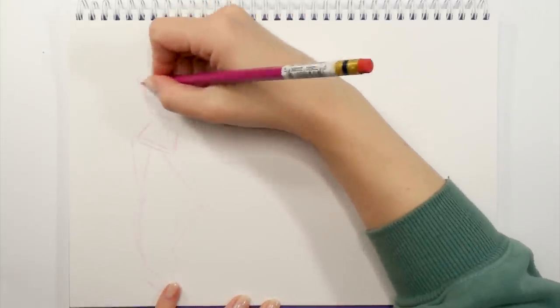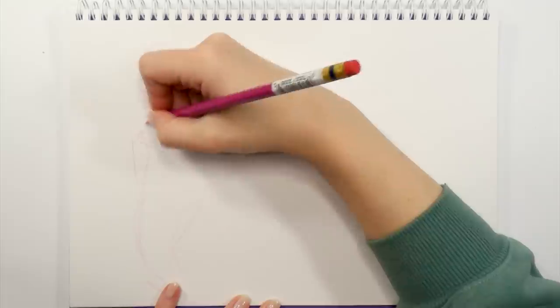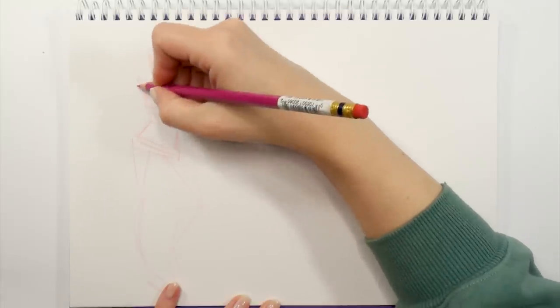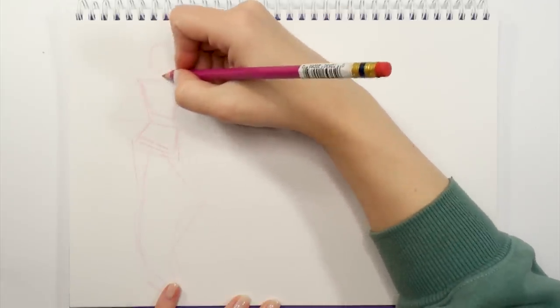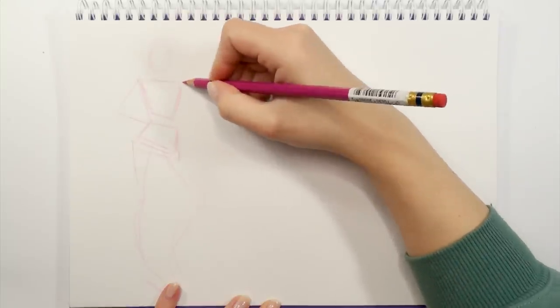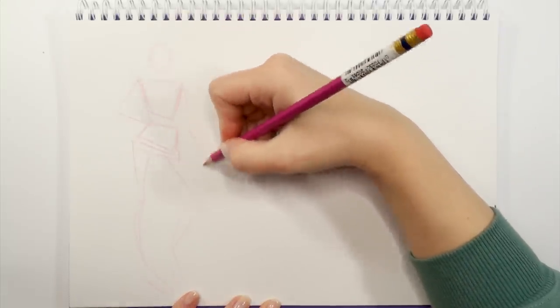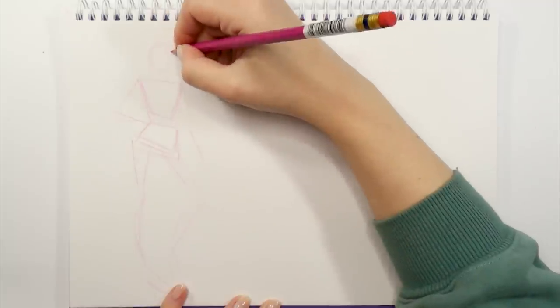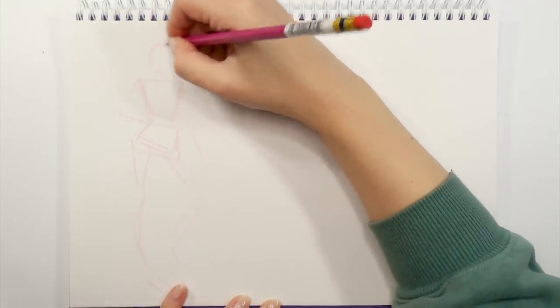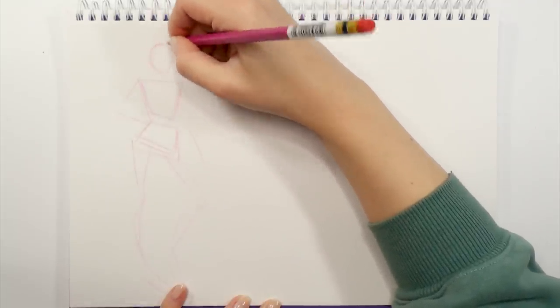For the head, I'm always starting off with an oval shape, and then I'm moving straight into the torso part of the drawing. In this case, I'm usually always drawing some kind of rectangular shape that's already bent in the direction that I want my body to stand towards.